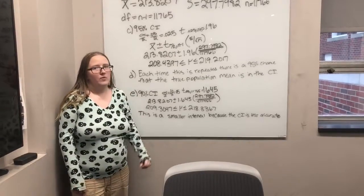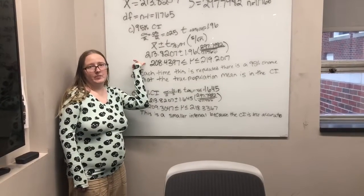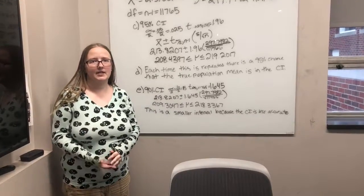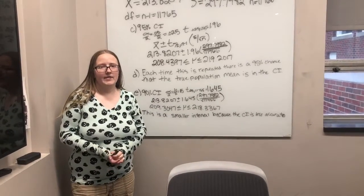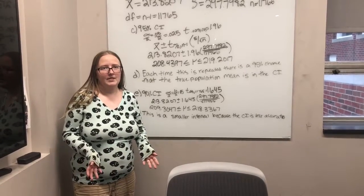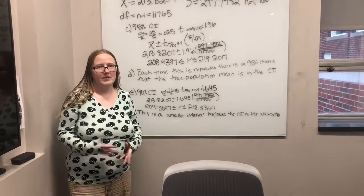And then D asked what this confidence interval means. And it just means that if we were to repeat this and take another sample, that we would have a 95% chance that the new confidence interval would contain the population mu, mean mu.